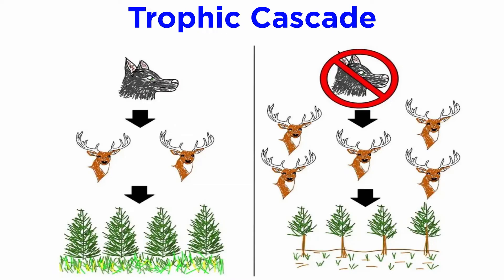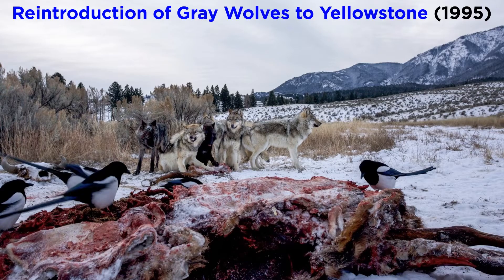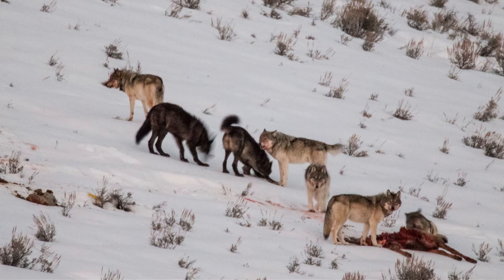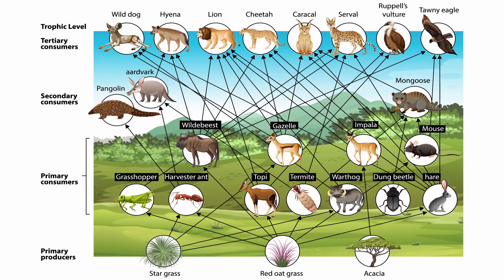Trophic cascades are powerful indirect interactions that can control entire ecosystems. These occur when predators limit the density or behavior of their prey and thereby enhance survival of the next lower trophic level. A classic example of such a cascade is the reintroduction of gray wolves to Yellowstone National Park, which reduced the number of elk and changed their behavior.